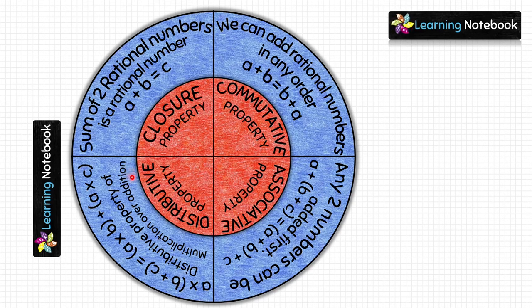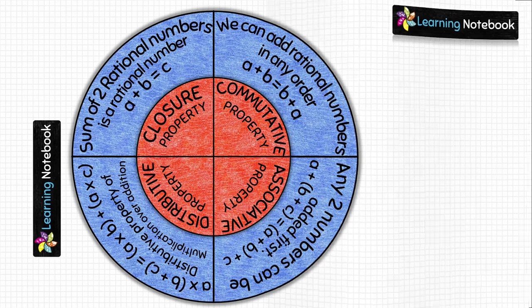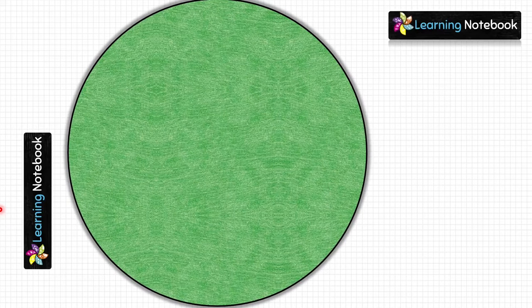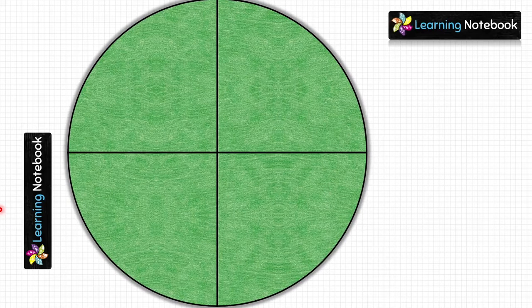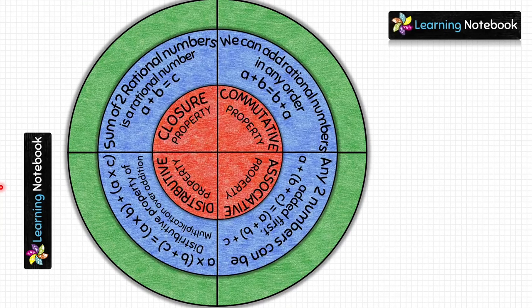Now we have prepared two circles for our rational number project. Take the green circle, fold it vertically as well as horizontally, then place both the blue and red circles on top of the green circle, making sure to match their centers.